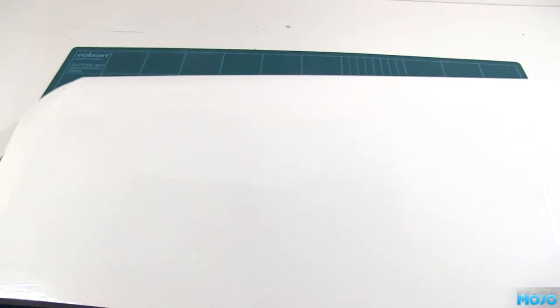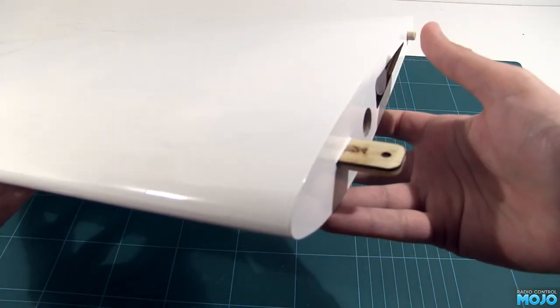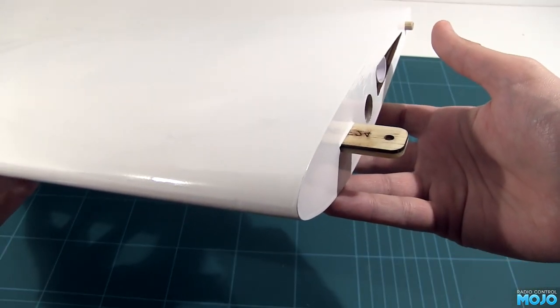Same principle. Pull it nice and tight, then shrink it once all the edges are stuck down. I've covered the root rib too. Probably don't really need to, but it does look nice.